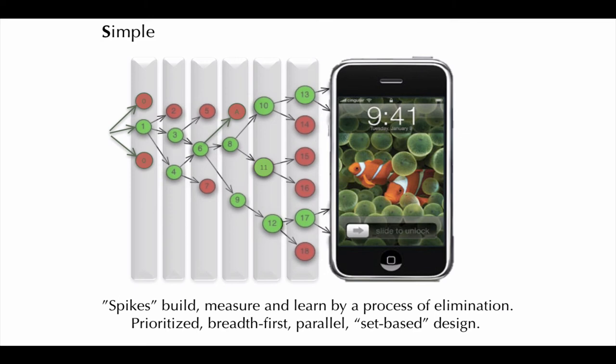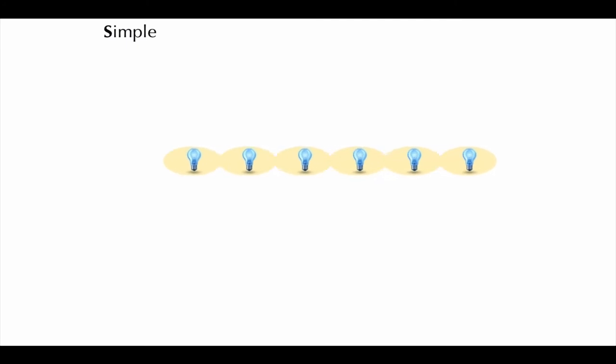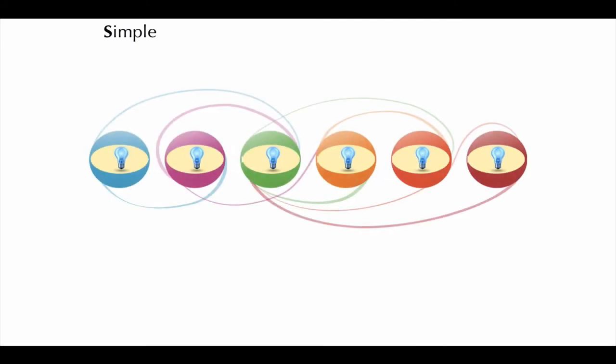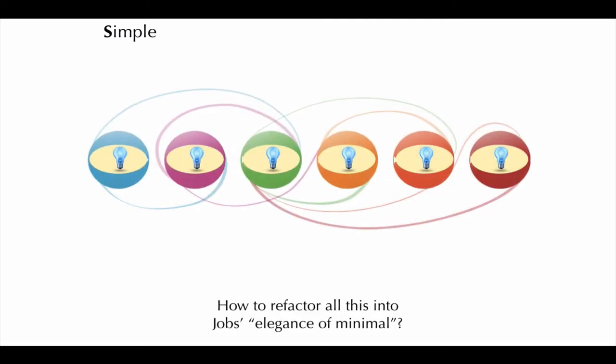So now we can return to the original question. Can we refactor these design methods to form a single, simple process that reliably targets Jobs' elegance of minimal?